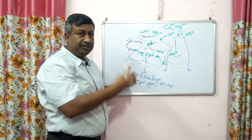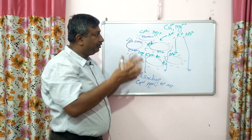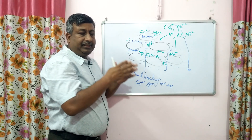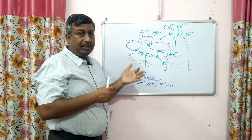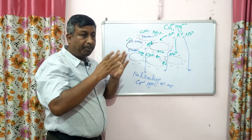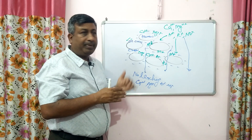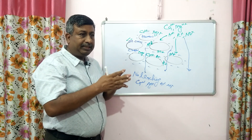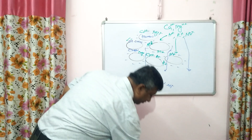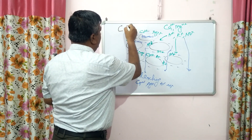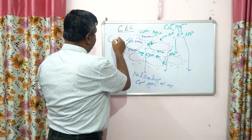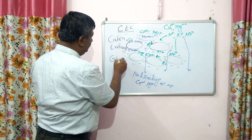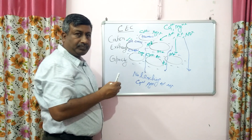When we add organic matter, humus is formed, and humus creates negative charges. Because of these negative charges it holds several cations, so cations remain in the soil system in the root zone and availability increases. Otherwise these nutrients are lost by leaching. This is the very important role of humus in increasing soil fertility by reducing leaching.